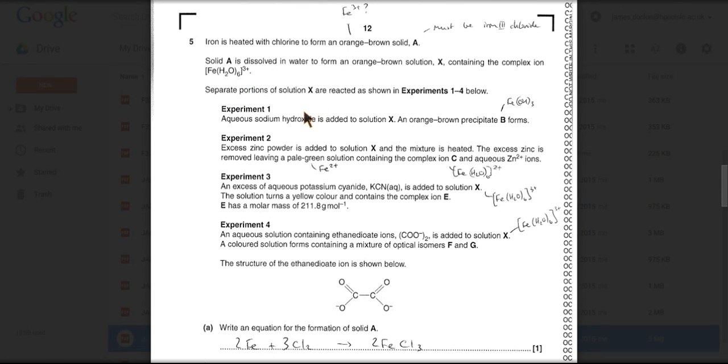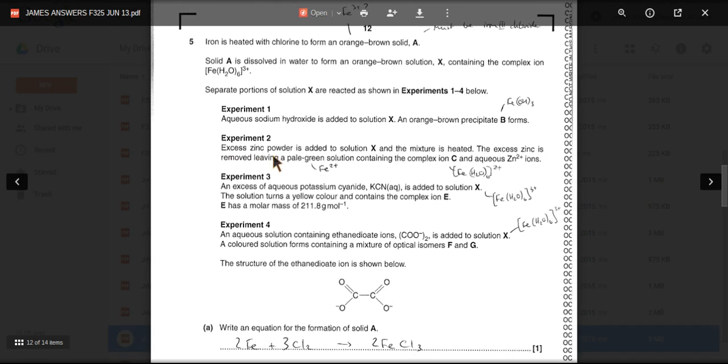So sodium hydroxide is added, orange-brown precipitate, so that's obviously iron(III) hydroxide - you get a precipitation reaction. Experiment two: excess zinc powder is added to a solution of X, mixture is heated, and the important thing is you've got a pale green solution formed.